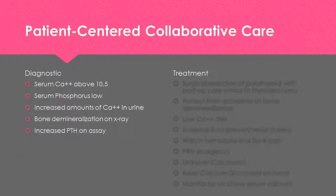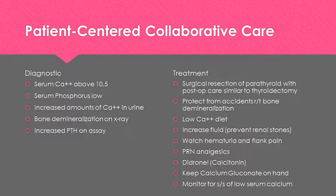Diagnostics include checking serum calcium, which will be elevated. Serum phosphorus will be low. There will be increased calcium in the urine. Bone demineralization will show on x-ray, and there will be increased PTH on assay. Treatment includes surgical resection of the parathyroid with post-op care similar to thyroidectomy. Protect the patient from accidents related to bone demineralization. Provide a low calcium diet, encourage increased fluid intake, and watch for hematuria and flank pain. Provide analgesics as needed, keep calcium gluconate on hand, and monitor for signs and symptoms of low serum calcium.